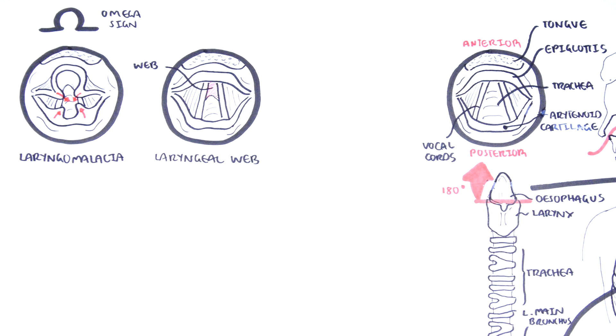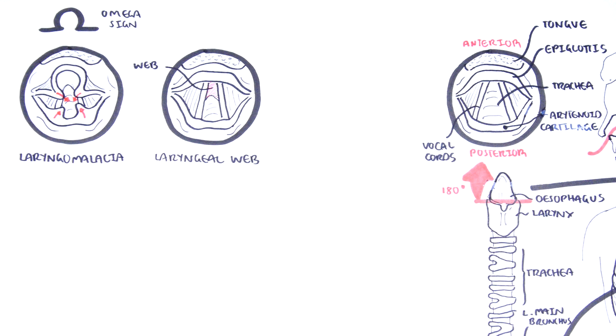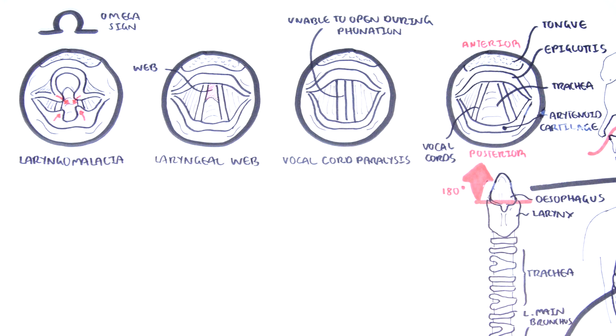Another cause of stridor is a laryngeal web, which is a fibrous layer of tissue that stretches between the vocal cords. This obviously causes partial obstruction of the airways, resulting in an inspiratory stridor. Vocal cord paralysis is another cause. Vocal cord paralysis can be unilateral or bilateral.